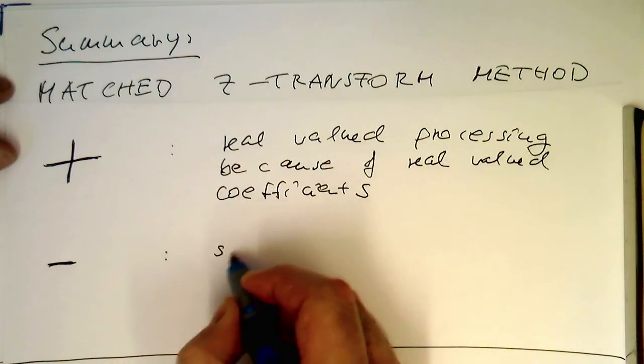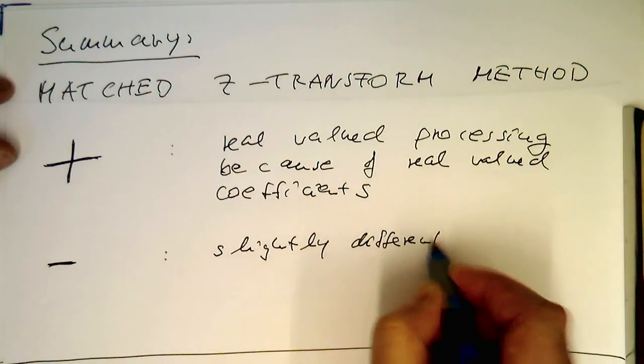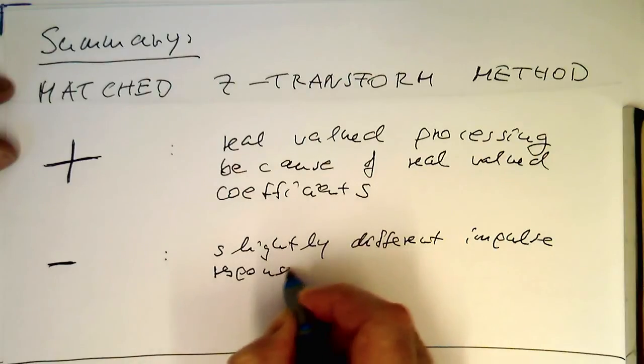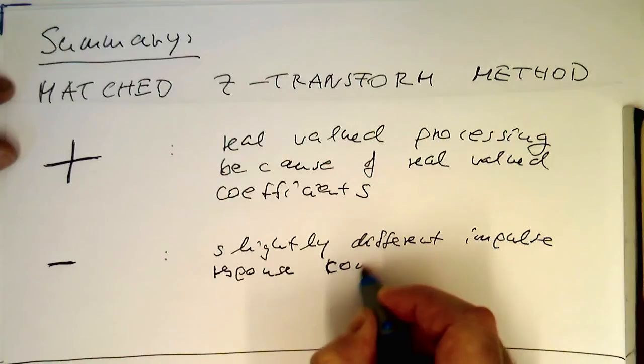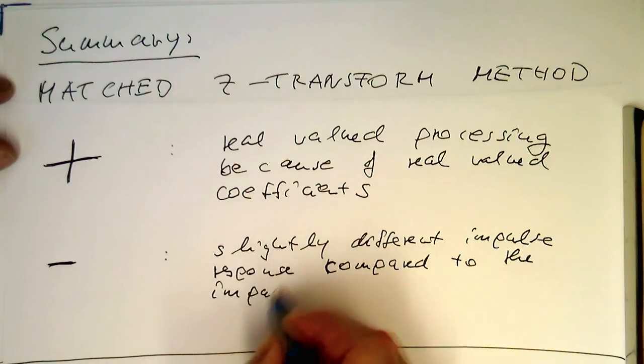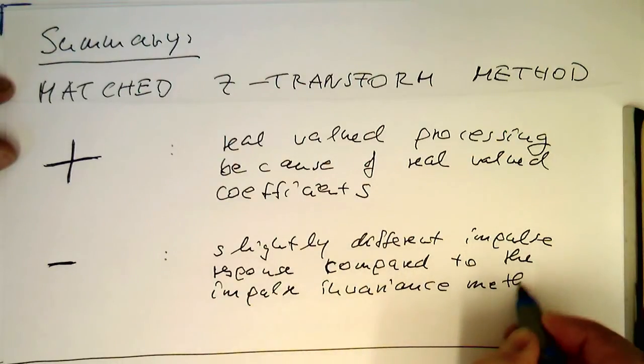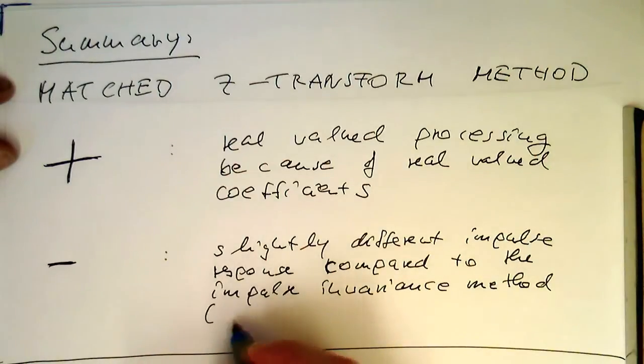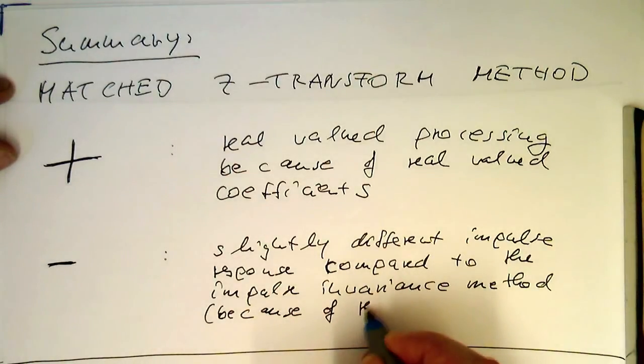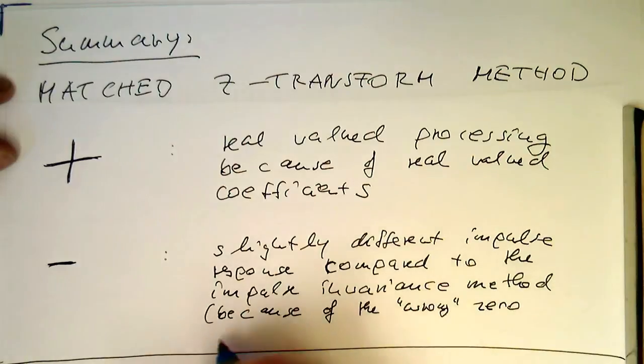compared to the impulse invariance method. This is because of the wrong zero mapping method.